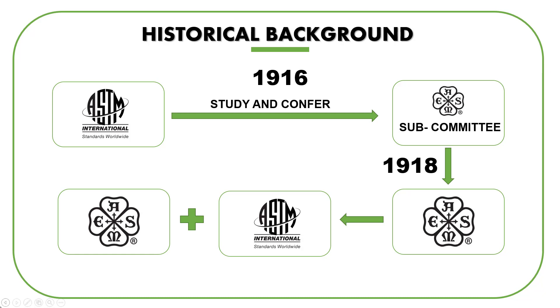A material specification in the ASTM standard starts with the letter A, while that of the ASME standard starts with the letters SA.